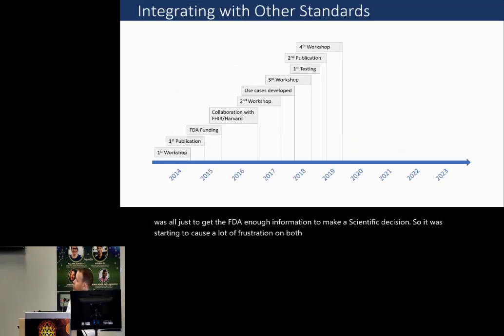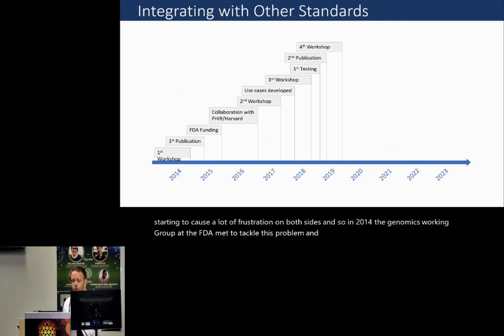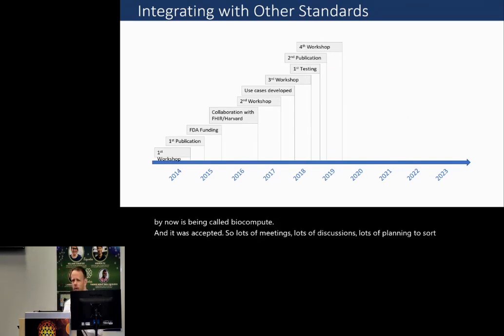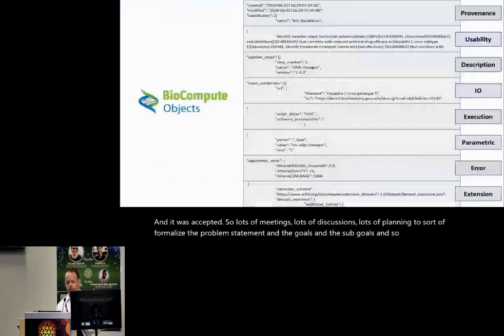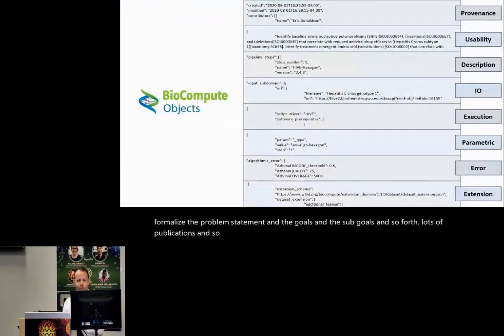And so in 2014, the Genomics Working Group at the FDA met to tackle this problem. And that idea from 2012 was proposed, which by now is being called Biocompute. And it was accepted. So lots of meetings, lots of discussions, lots of planning to sort of formalize the problem statement and the goals and the subgoals and so forth. Lots of publications. And so after input from hundreds of individuals across dozens of institutions, we ended up with this data model here.